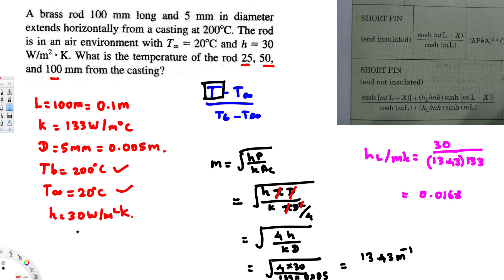At 25 millimeters, you will get 156.5 degrees Celsius. At 50 millimeters, you will get 128.5 degrees Celsius.